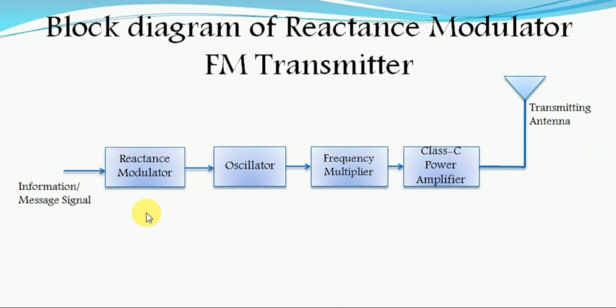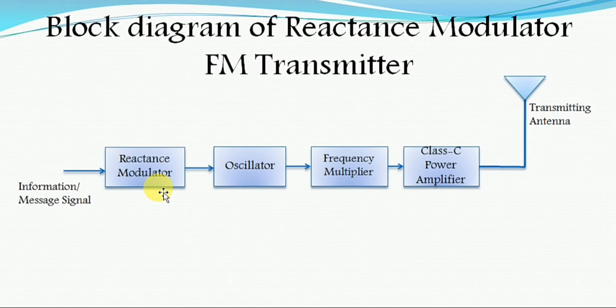What is the purpose of the reactance modulator? In an FM transmitter, the reactance modulator is mainly used to convert the changes in amplitude variations of the message signal into corresponding frequency variations. In practice, with the help of the oscillator circuit and the reactance modulator circuit, we convert the amplitude variations of the modulating signal to reactance, and then from reactance change to frequency variation.